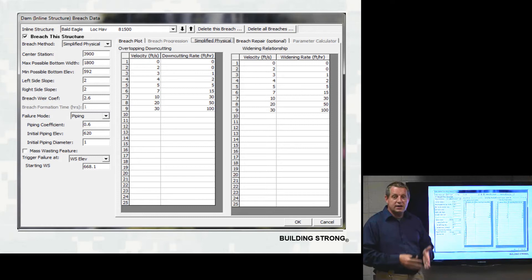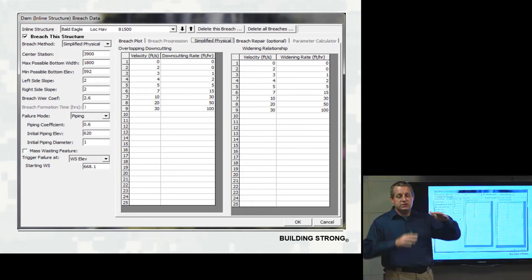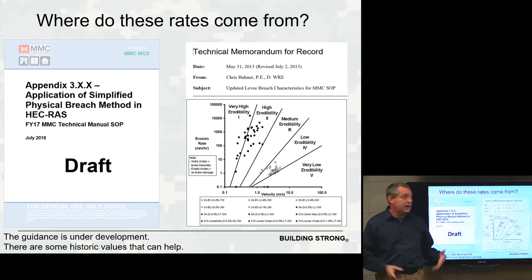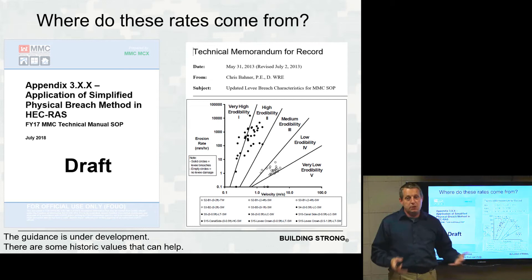The hard part of simplified physical breaching is that you have to come up with the relationships — a relationship between velocity and down-cutting rate — and bring some data to the table. But what you get in return is a feedback between flow and both down-cutting and widening, which computes the timing for you. The model is more responsive and doesn't stop widening while massive water is still rushing through. Research from the Corps on velocity versus erosion rates for different erodibilities, as well as work by Erdick, provides some of these data.